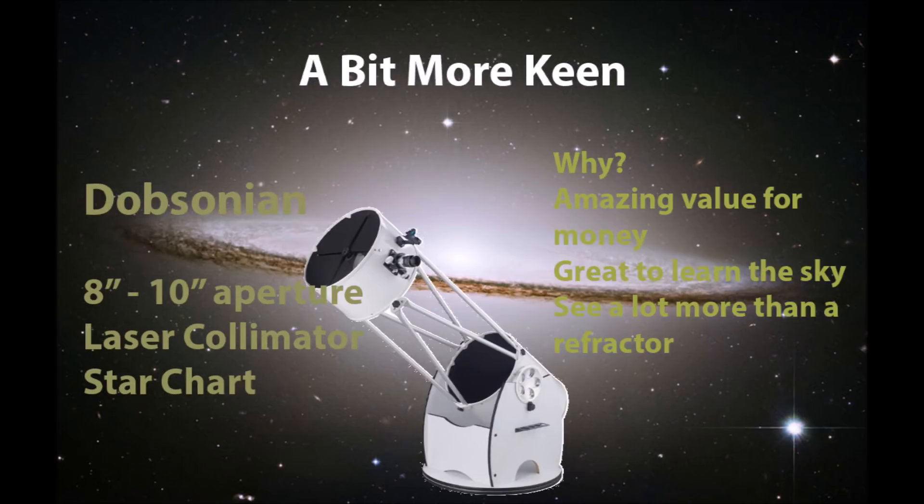If you're a bit more keen and don't mind about dealing with collimation and going through the learning process, then you need to get yourself an 8-10 inch Dobsonian. A Dobsonian is a Newtonian that's already mounted. These are the type of telescopes that are generally recommended for new amateurs getting into the business. It allows you to learn the sky, because these are not driven or go-to type telescopes.